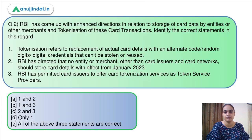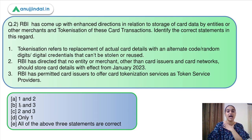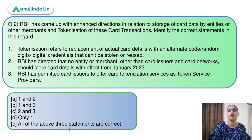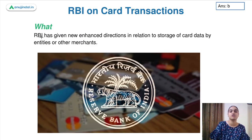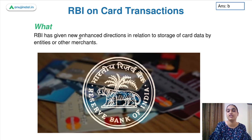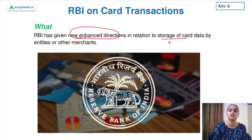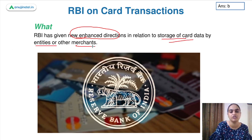Moving on to question number 2, which says: RBI has come up with enhanced directions in relation to the storage of card data by entities or merchants, and tokenization of card transactions. You have to identify the correct statements in this regard. Let's discuss tokenization and what decision RBI has taken recently.